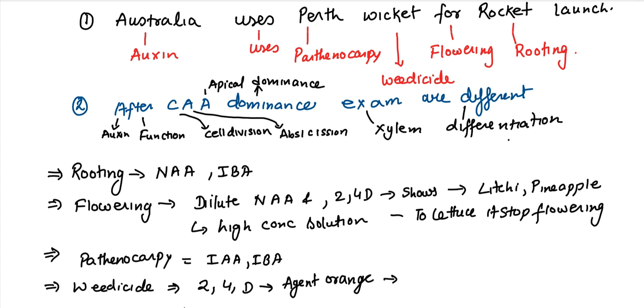Now when we are talking about the weedicide, they kill dicots. Remember, they kill dicots, not monocots. So this is one of your uses which we see in case of your particular auxin.